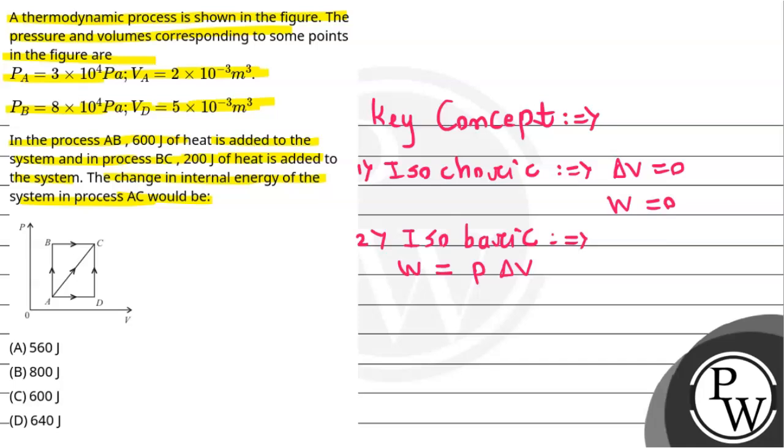The third concept is the first law of thermodynamics, which states that the amount of heat added equals the change in internal energy plus the amount of work done. Using these concepts, we'll start with the solution. As you can see, A to B there is no change in volume.